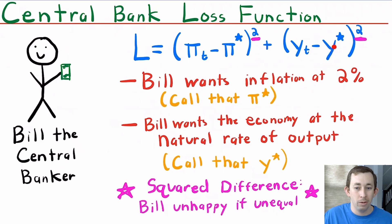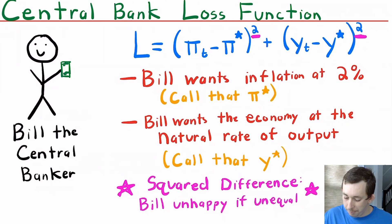Generally in the US we have a dual mandate, so we'll use that dual mandate to fill in this example. Based on that dual mandate, Bill would want inflation to be 2%, so this π* would be 2%, and Bill wants neither a boom nor a recession, so we would say that the output gap should be zero.